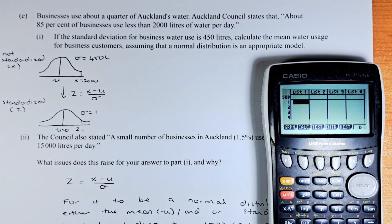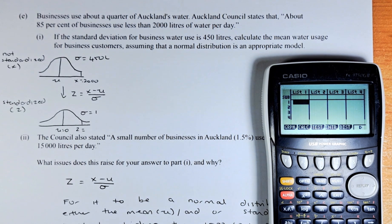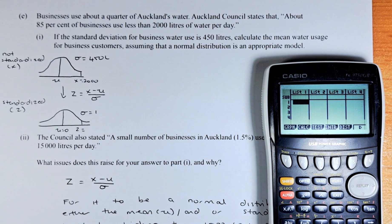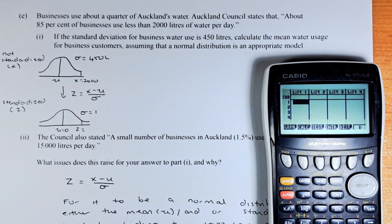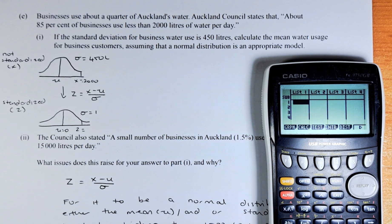If the standard deviation for business water use is 450 litres, calculate the mean water usage for business customers, assuming that the normal distribution is the appropriate model.